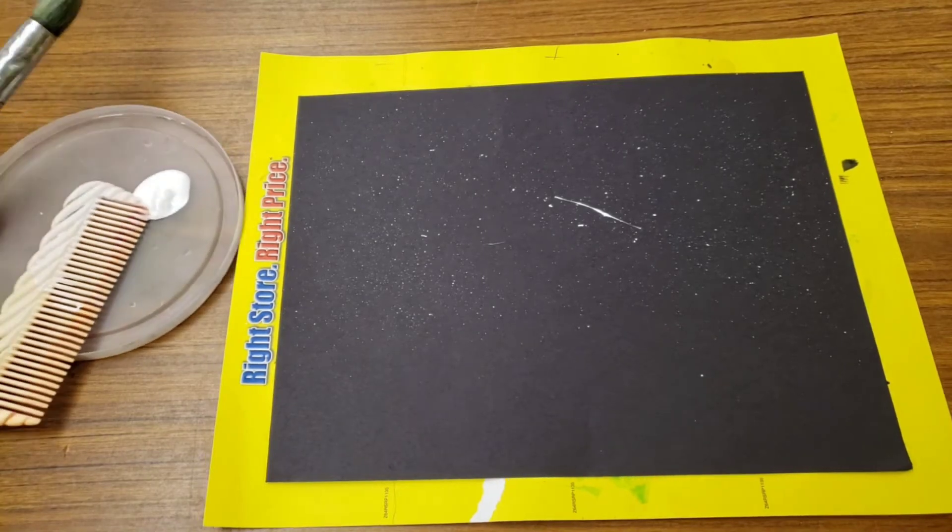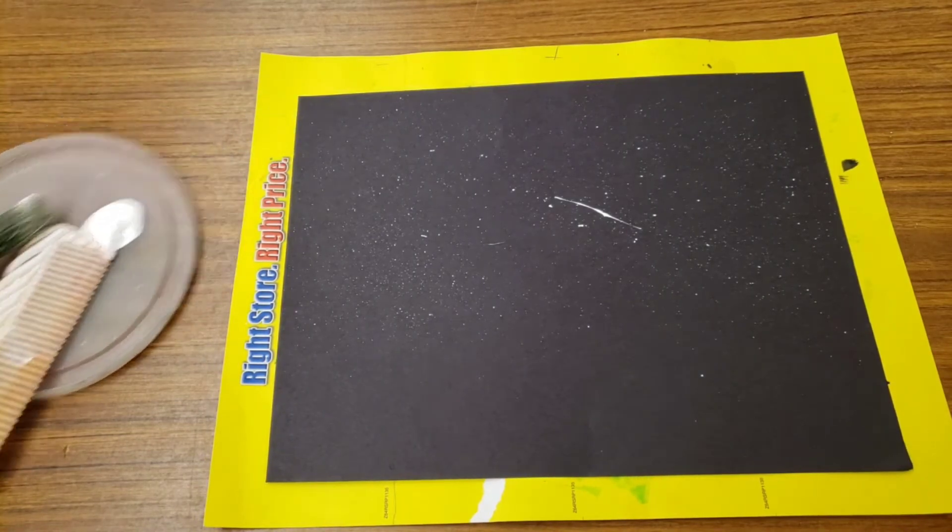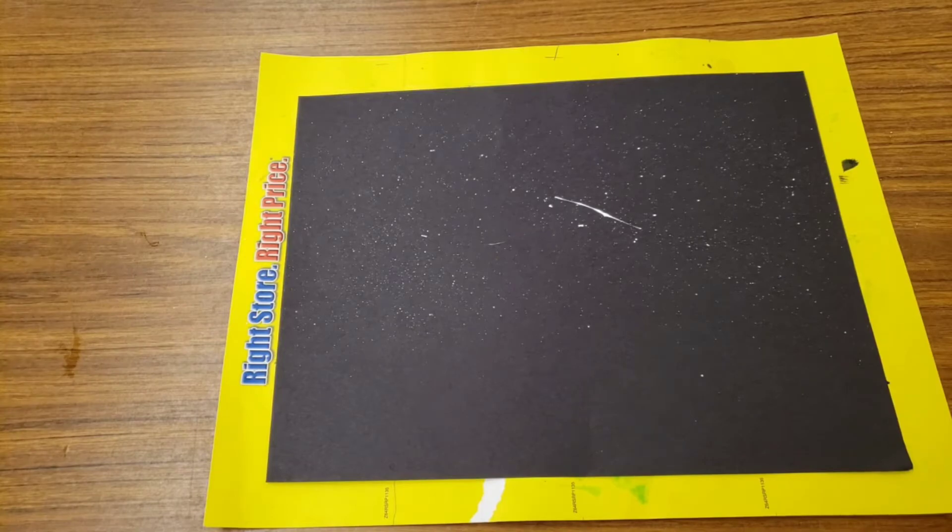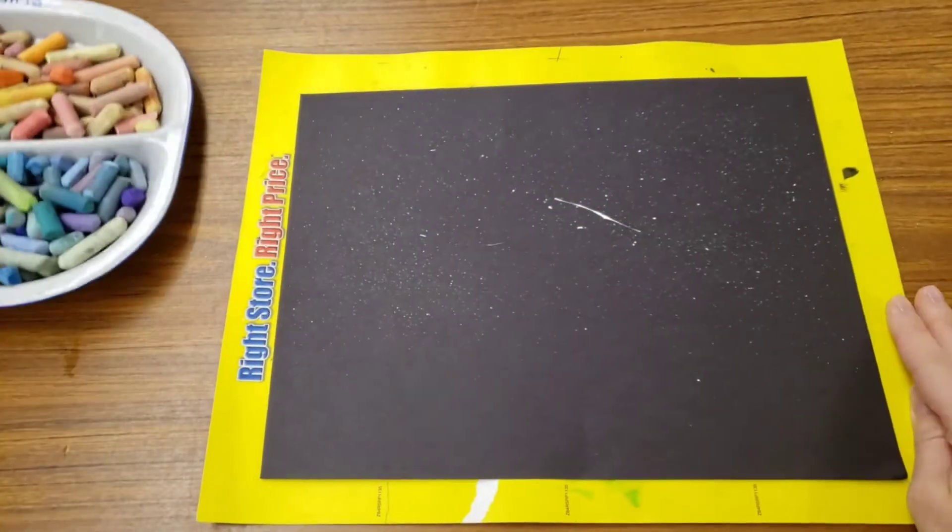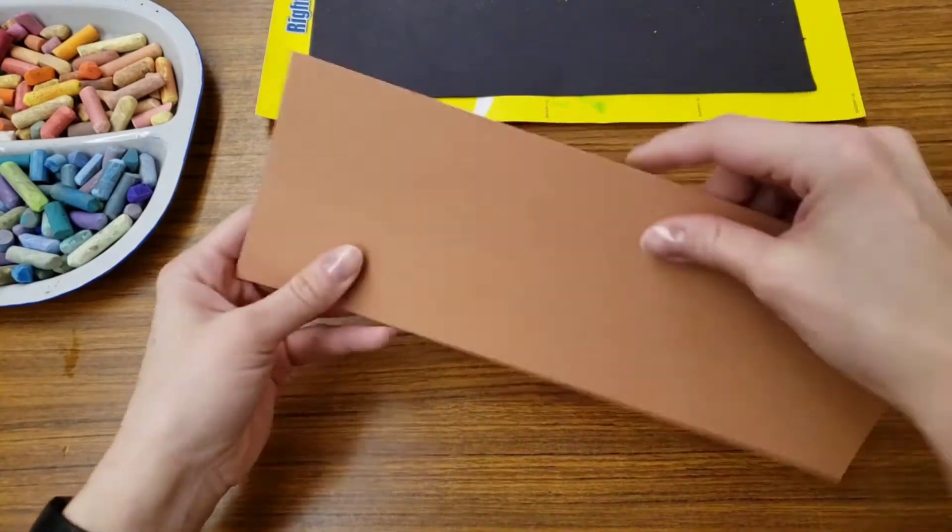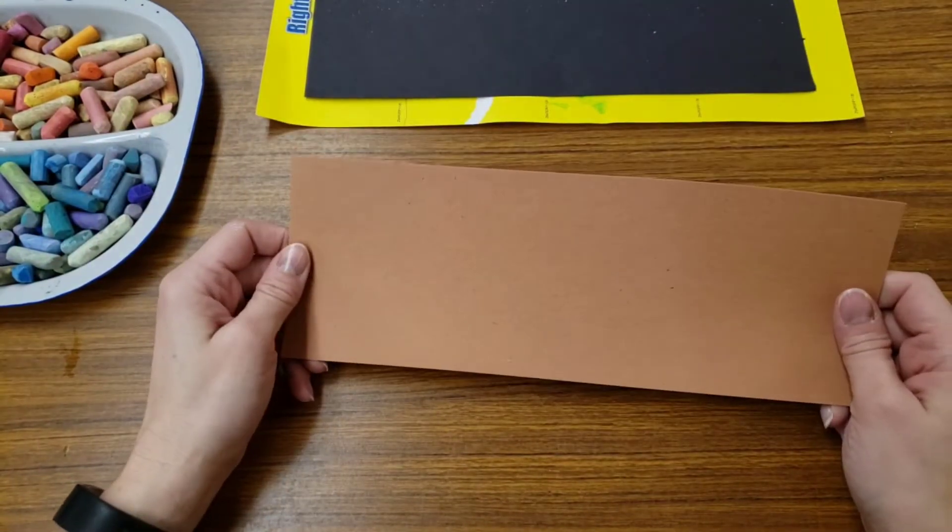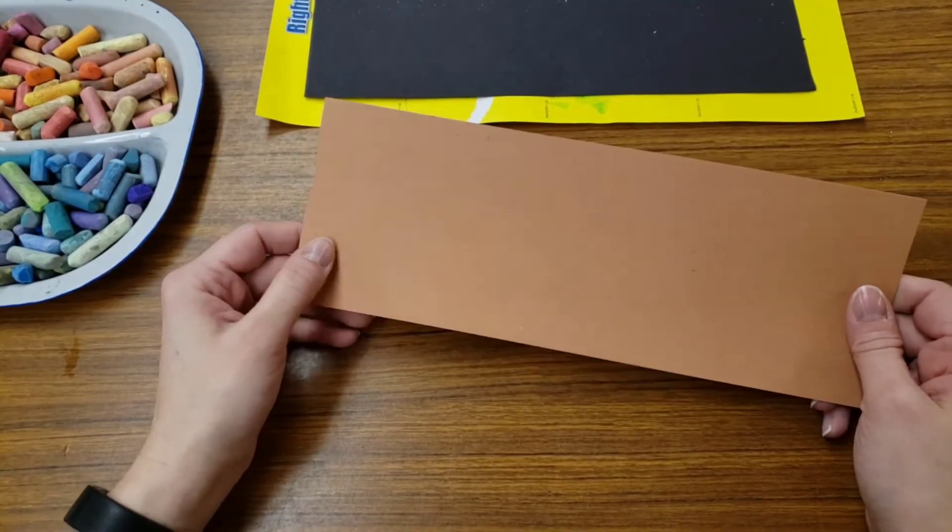So whenever your comb and your brush is not in use, they need to go on your tray. Next, I'm going to set that to the side for a second. You will have a piece of paper. The color does not matter. This is a tool.